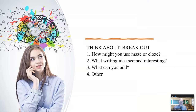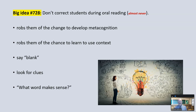Big idea: don't correct students during oral reading, and this is tough to do — it robs them of the chance to develop metacognition, to stop and ask 'does this make sense?' If you jump in all the time, allow them to keep going. If they're still creating meaning, do not correct them during oral reading. Teach them to say blank and look for clues, or say blank and keep going, or say what word makes sense. Never say 'sound it out' — they know that if they could sound it out they wouldn't stop. We want them to use context or syntax, which is much more efficient than trying to put all the little letters in short-term memory.